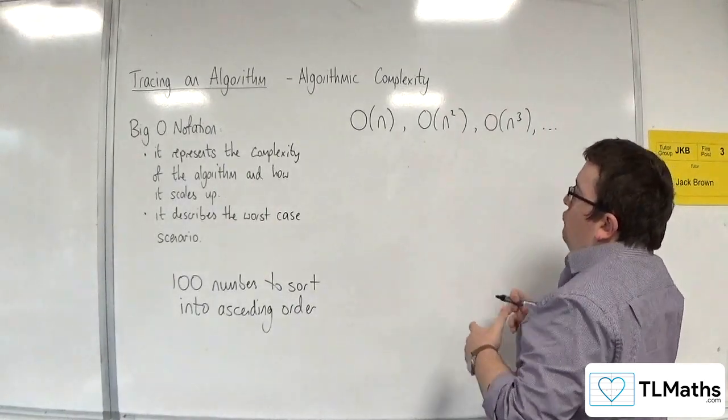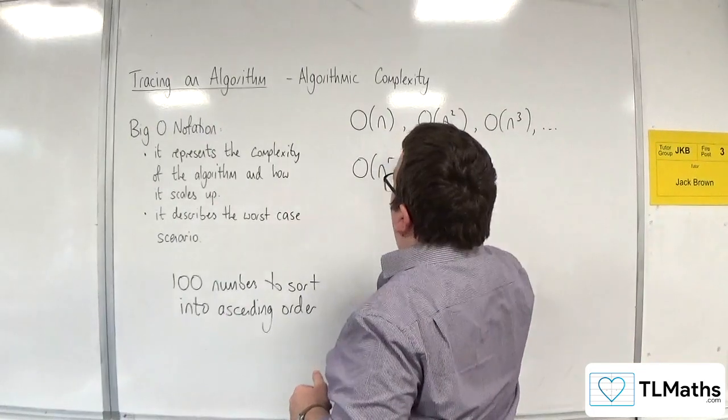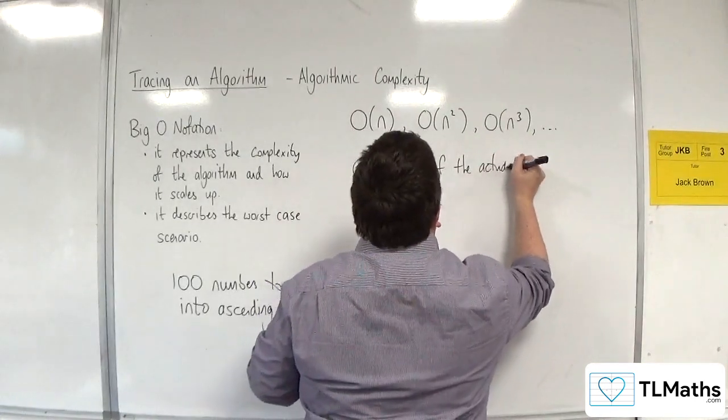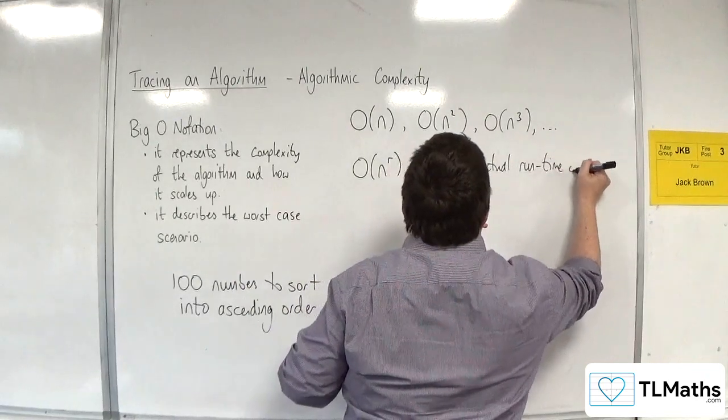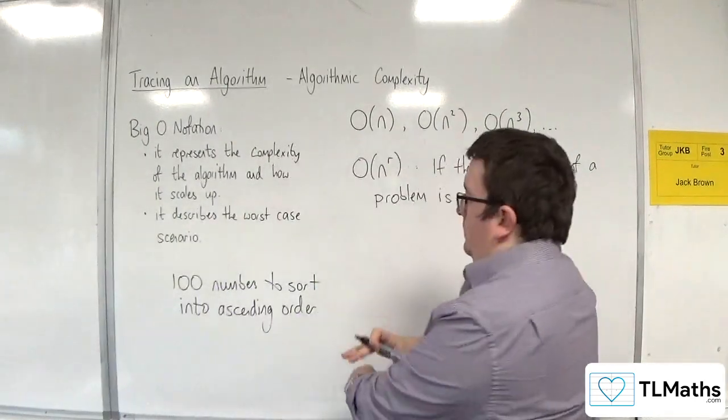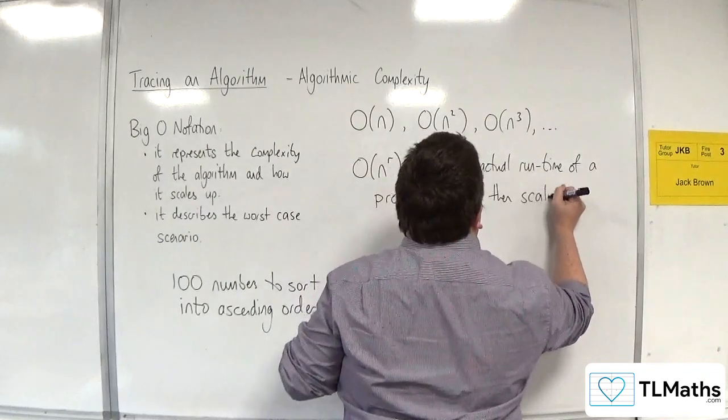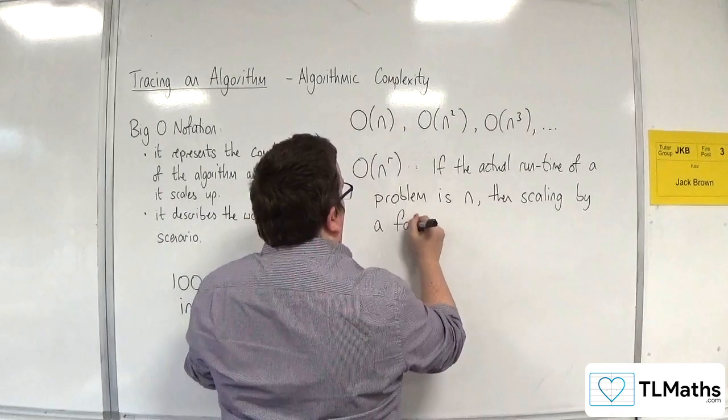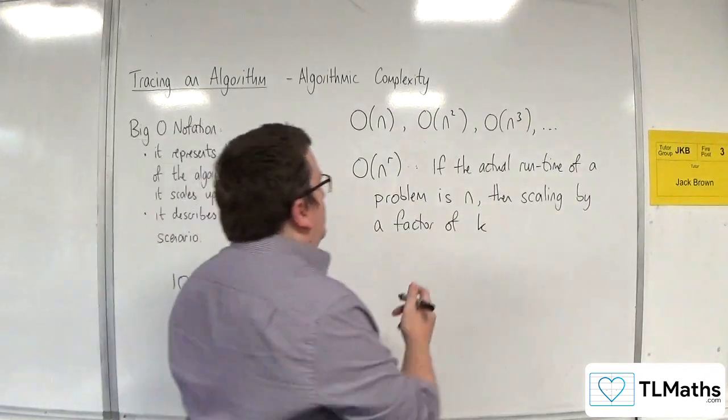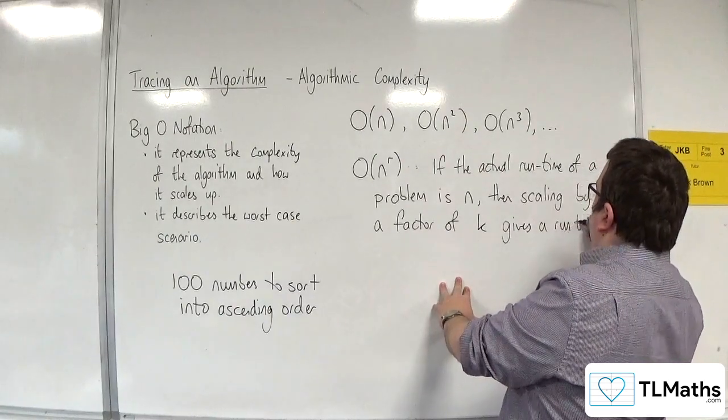So what we can say in general, in generality for this, is that if you've got order of n to the r, if the actual run time of a problem is n, say, then scaling by a factor of k, so if you scale it by a factor of k, gives a run time of,